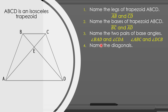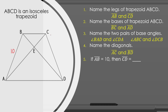Number four, let us name the diagonals. The diagonals of this isosceles trapezoid are diagonal AC and diagonal BD. Number five, if side AB is equal to 10, then side CD is equal to 10 as well, since in an isosceles trapezoid the legs are congruent.